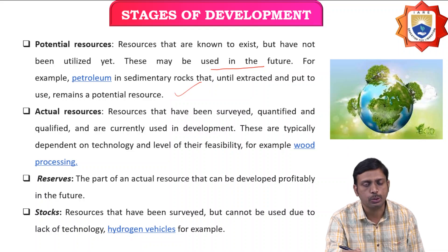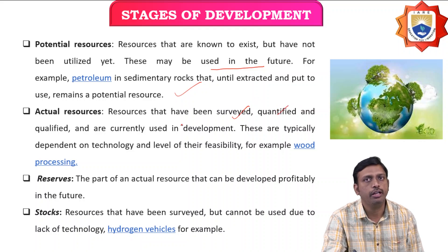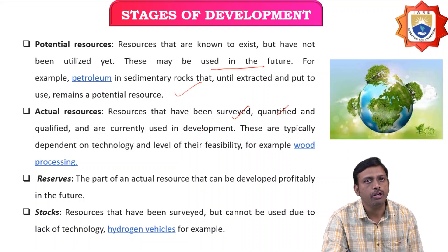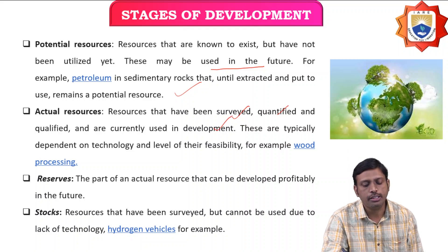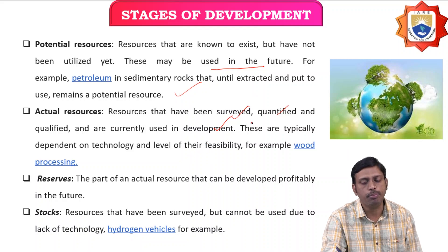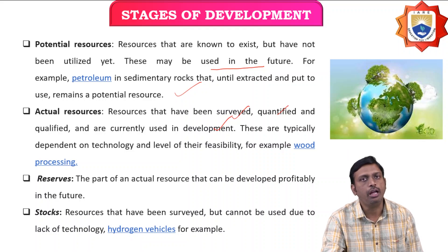Actual resources are those that have been surveyed, quantified, qualified, and are currently used in development. They are typically dependent on technology and the level of feasibility. An example is wood processing, which comes under actual resources.